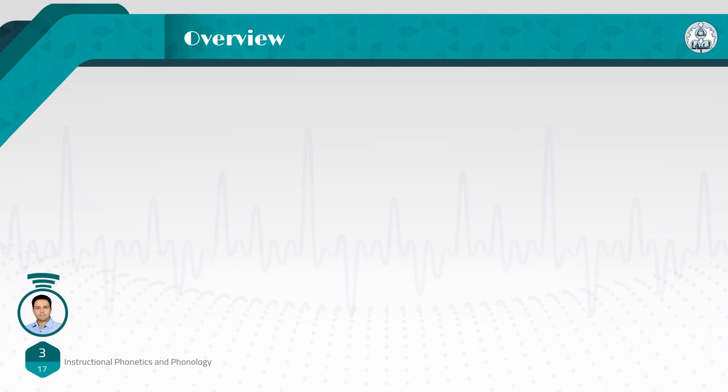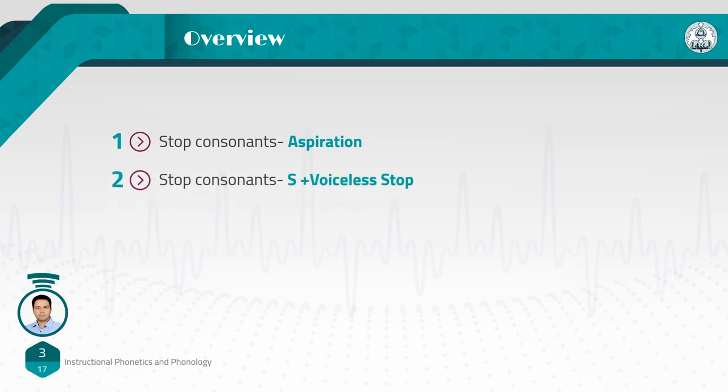In the previous session, we talked about stop consonants. We focused on aspiration, which is a period of voicelessness after the release of the stop — the burst of air at the start of words like pi, tie, or chi. We also focused on the effect of S plus voiceless stop, as in words such as spy, sty, sky.